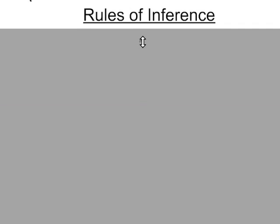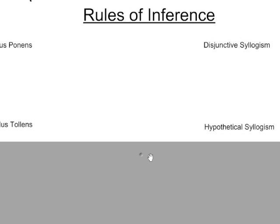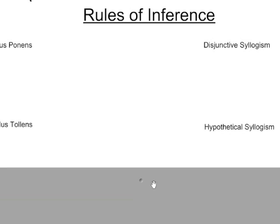There are many more rules of inference, but for this level of work I'm going to focus on these basic nine. Some of the ones you've discovered up to this point are modus ponens, the disjunctive syllogism, modus tollens, and the hypothetical syllogism.